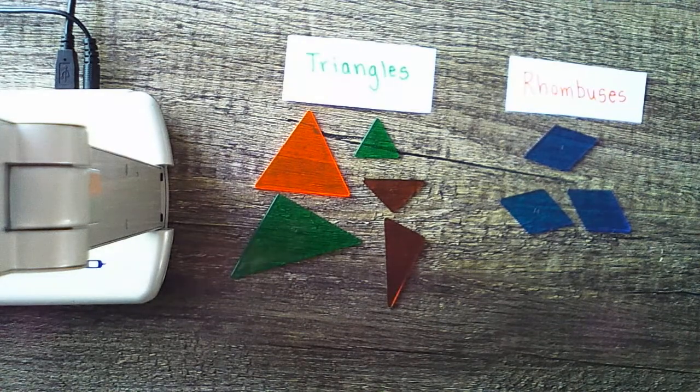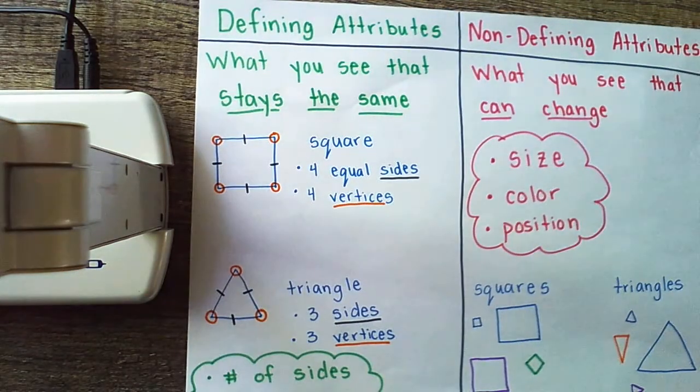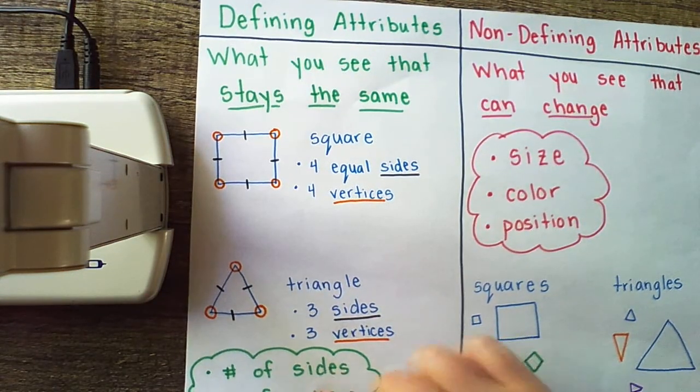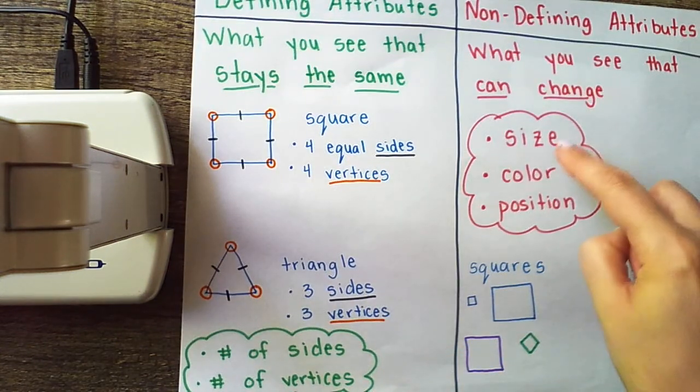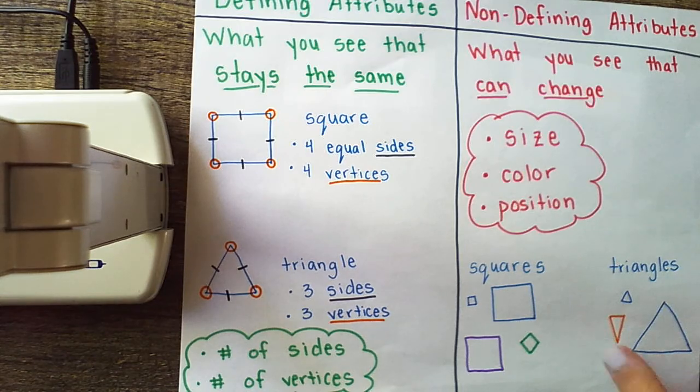All right, friends. As you are sorting shapes, you have to think about the defining attributes of those shapes. How many sides and how many vertices does it have? Keeping in mind that size, color, and position do not matter.